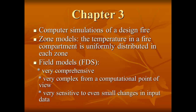Chapter 3 provides a review of computer simulations of design fire zone and field models. Zone models are relatively simple from a computational point of view and based on the assumption that the temperature in a fire compartment is uniformly distributed in each zone, and the hydrodynamic proportion of the burning process is practically omitted. There are many zone modeling packages available on the market and a summary of available current zone models is presented in this chapter. Field computer models are very comprehensive on the one hand, but on the other hand they are very complex from a computational point of view and very sensitive to even small changes in input data or any boundary conditions. A summary of available current zone and field models is also presented in this chapter.